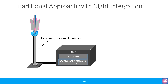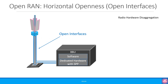Let us start with the traditional vendor approach of a closed network with the BBU running on dedicated hardware with a special purpose processor or SPP. There is generally a proprietary CPRI interface between the BBU and the RRU. The most basic form of Open RAN is open interfaces between the BBU and the RRU. This is sometimes also referred to as horizontal openness or radio hardware disaggregation.